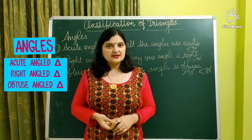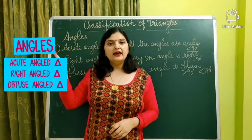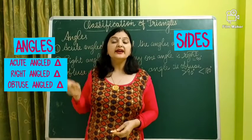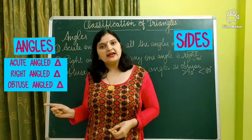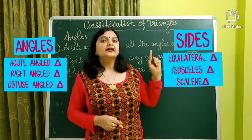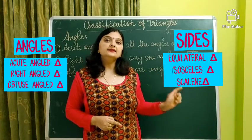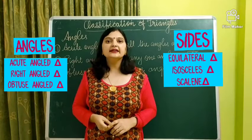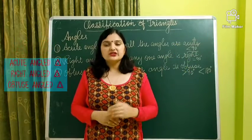So this is the classification of triangles based upon their angles and based upon their sides. Based upon the angle, we have: acute angled triangle, right angled triangle, and obtuse angled triangle. Based upon the sides, we have: equilateral triangle, isosceles triangle, and scalene triangle.